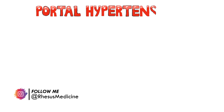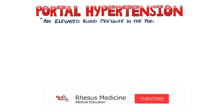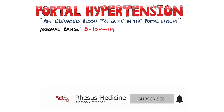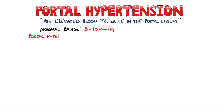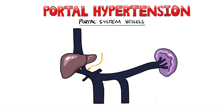Portal hypertension refers to a higher than normal blood pressure in the portal system. A normal range for this pressure is 5 to 10 millimetres of mercury. Portal hypertension can also be defined as a portal pressure more than 5 millimetres of mercury higher than the pressure in the inferior vena cava.